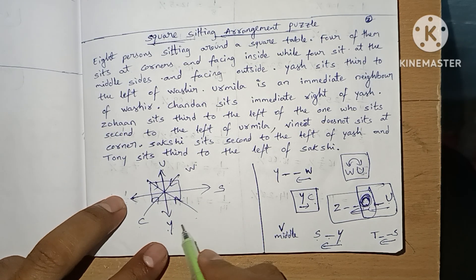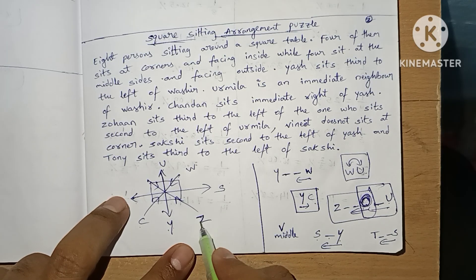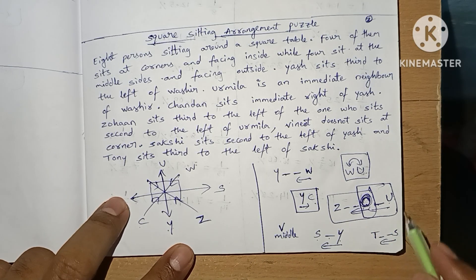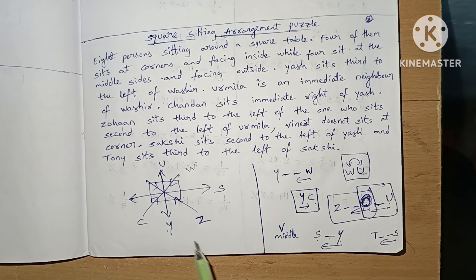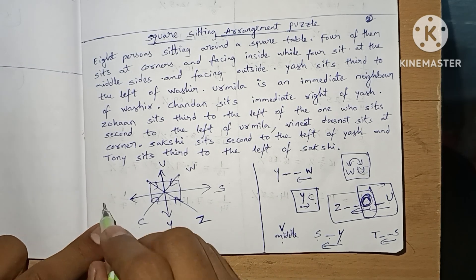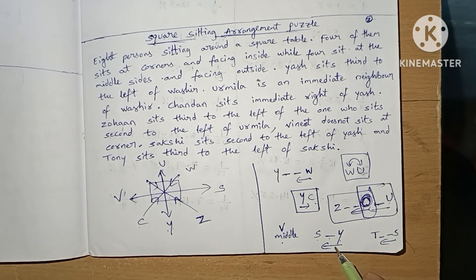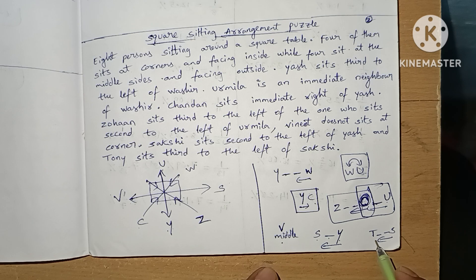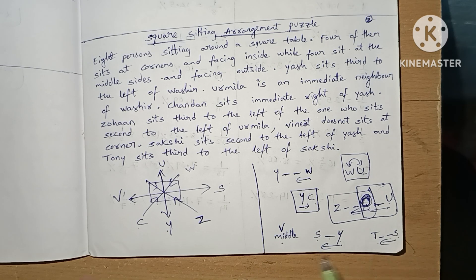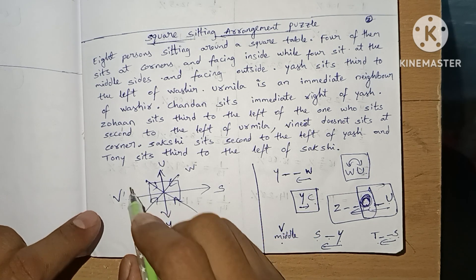And his left of second person is Z. This is Z. This one also completed. Next, there is only one middle place which is for V.